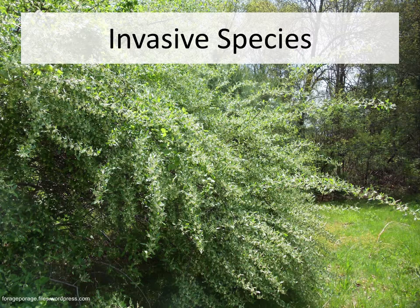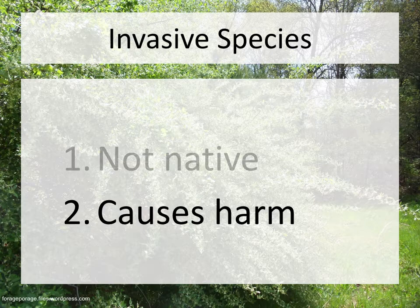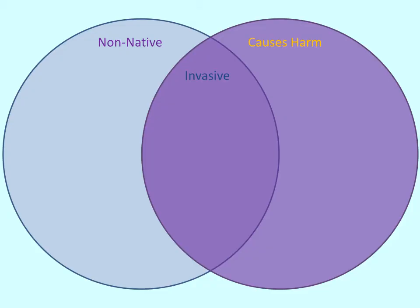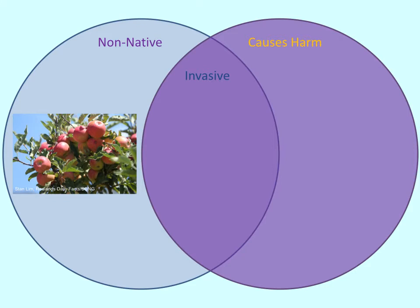An invasive species is a two-part definition. The organism has to be both non-native and cause harm to the environment, the economy, human health, or normally a combination of the three. For example, there are many varieties of apple trees that are not native, but they do not cause harm and we like having them.